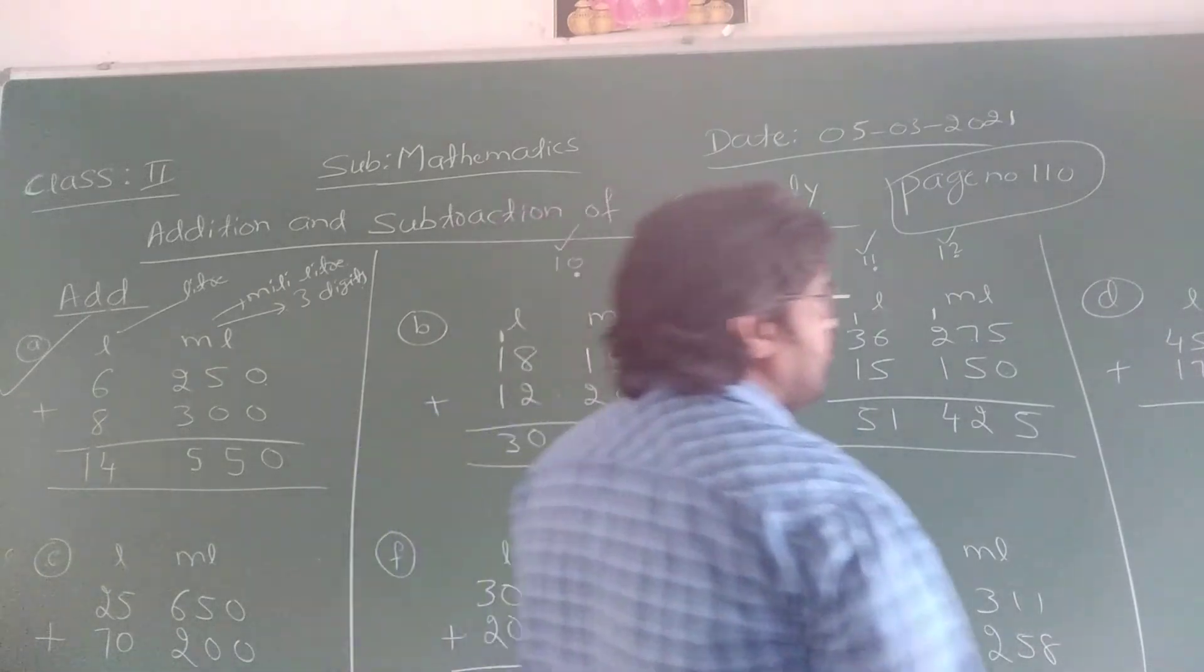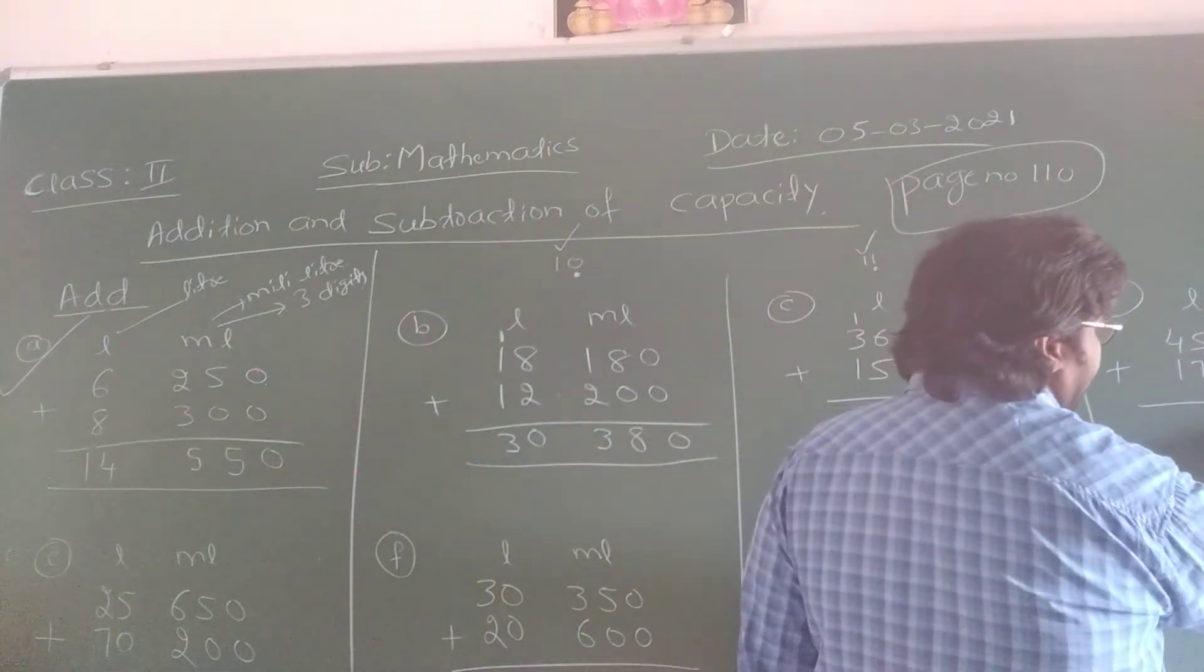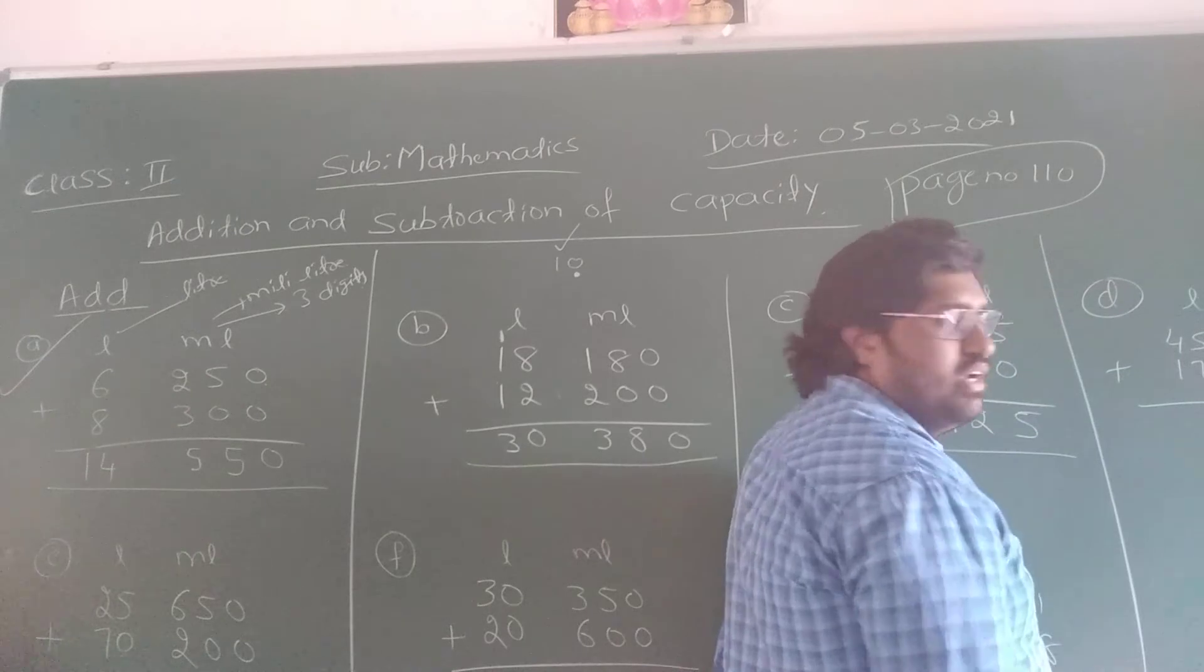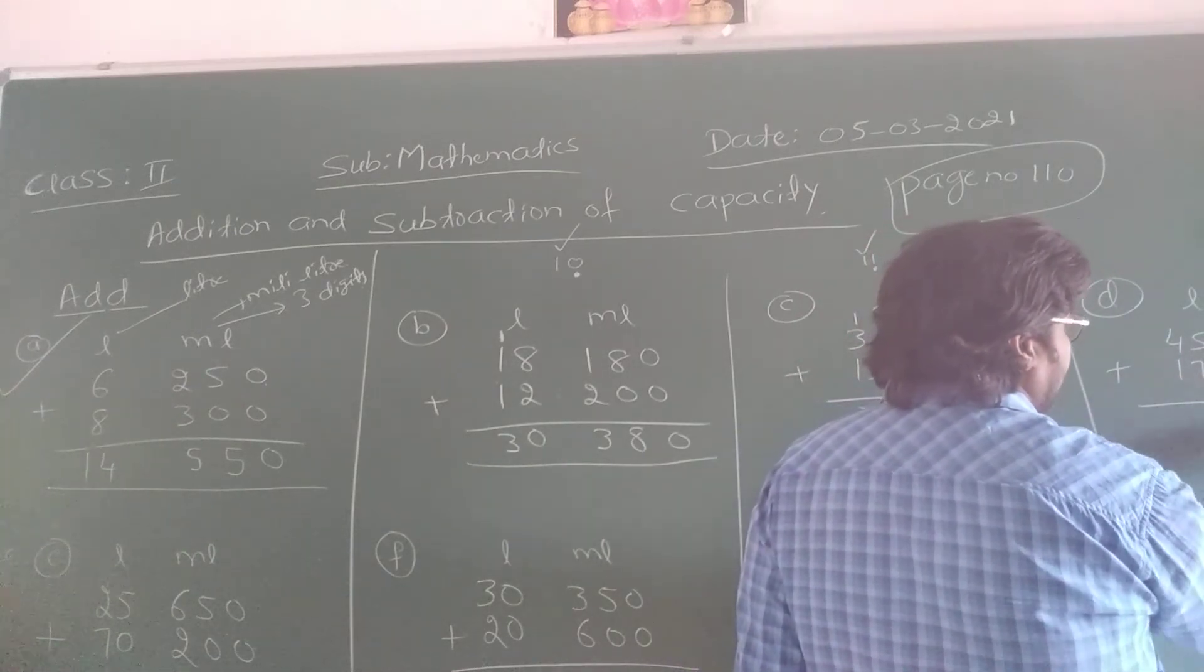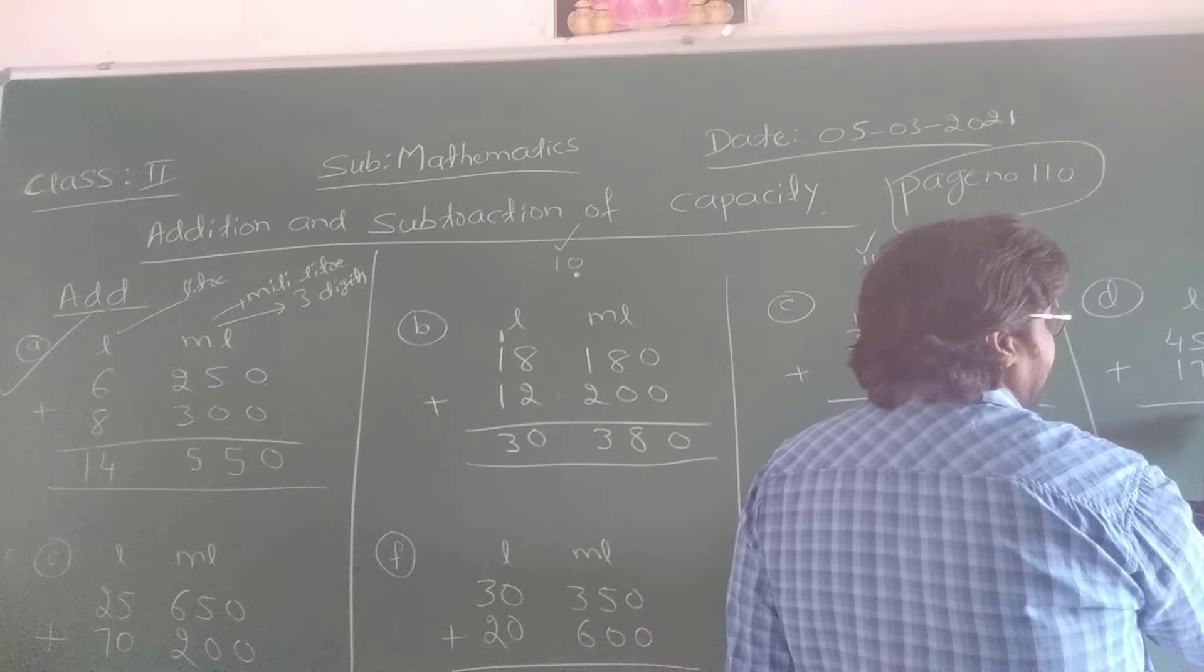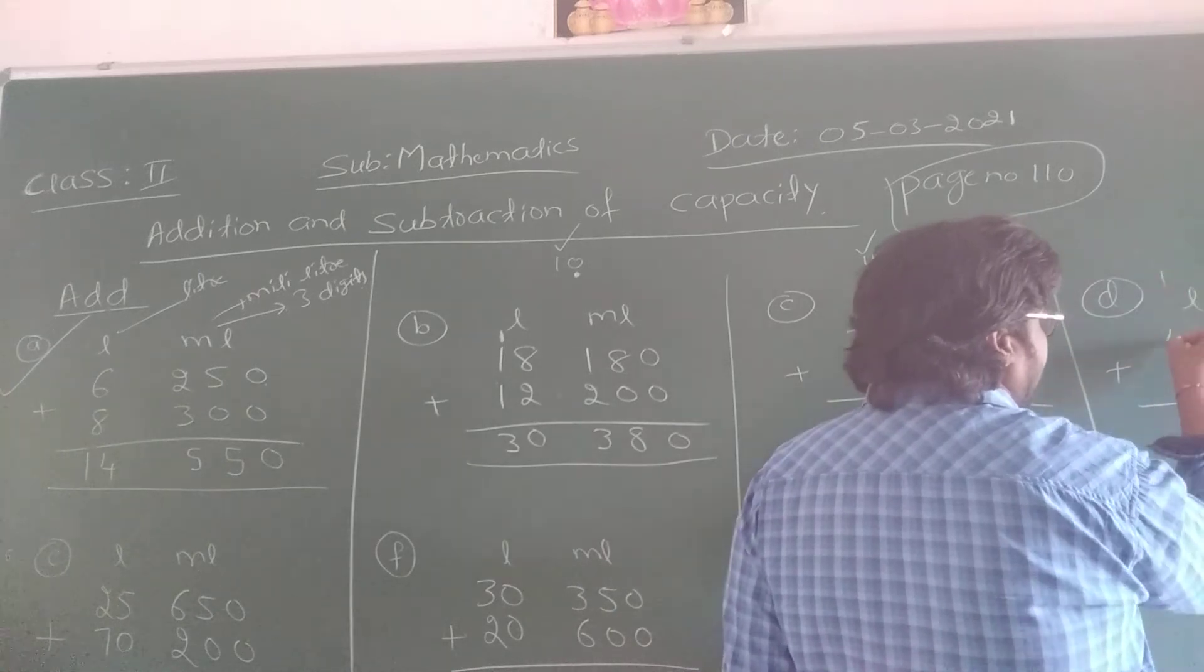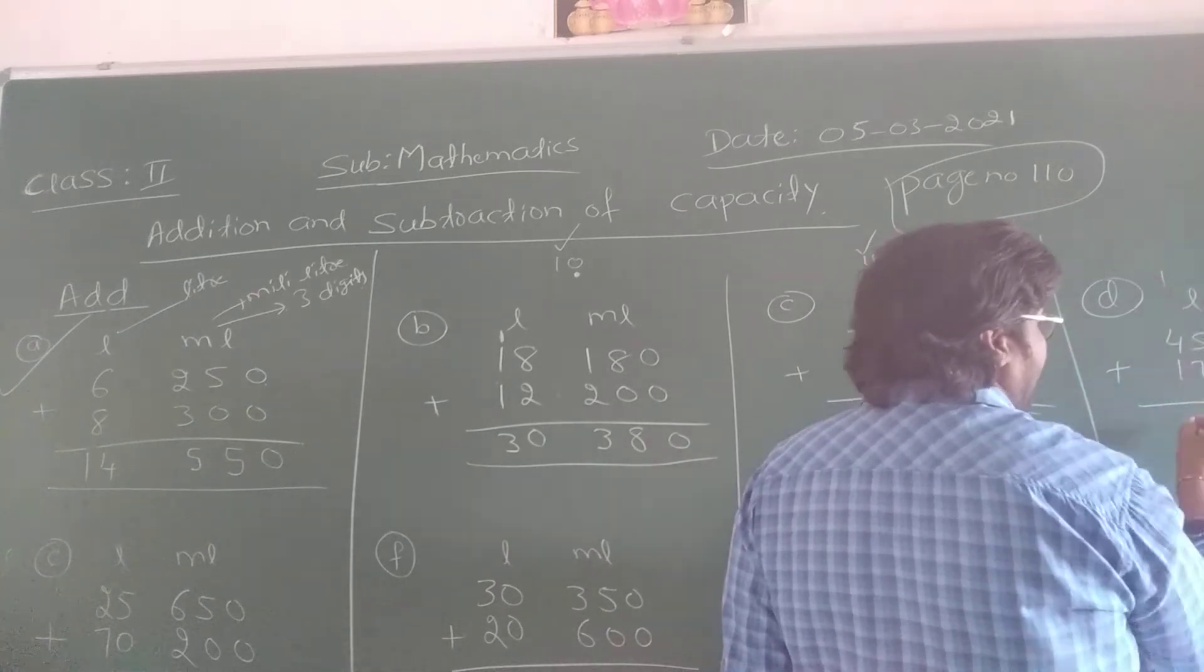Now take the fourth one. 0 plus 0 is 0, so I am going to write 0. 2 plus 0 is 2. 5 plus 1 is 6. 7 plus 5 is 12, 2 as it is carry 1. 4 plus 1 is 5, 5 plus 1 is 6.